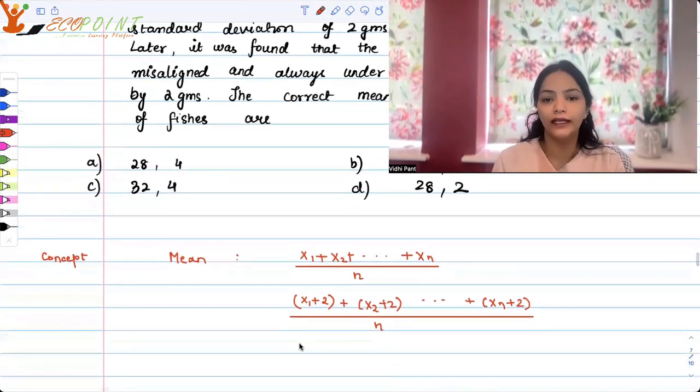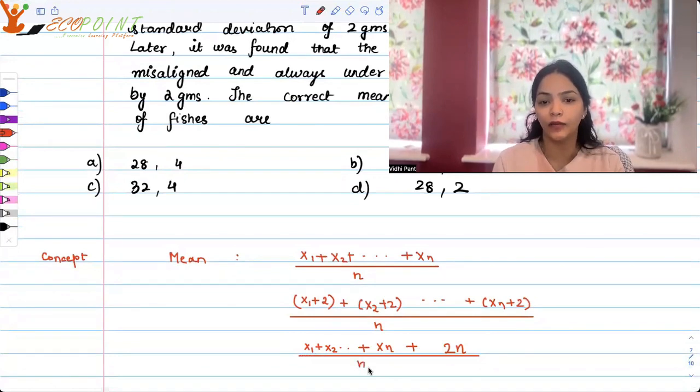So what we get here is, if I open all the brackets, I get x1 plus x2 till xn plus I get 2 how many times? From each bracket I get once, so it's 2n. 2 gets added n times upon n.